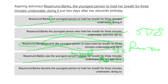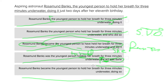The last option: 'Rosamund Banks became the youngest person to hold her breath for three minutes underwater, doing so just two days after her 11th birthday.' This is the best option because 'doing so just two days after her 11th birthday' cannot stand as a separate sentence on its own — it is simply extra information within the same sentence. So this is the correct answer. I hope this explanation helped figure out this problem, and good luck — happy prepping!